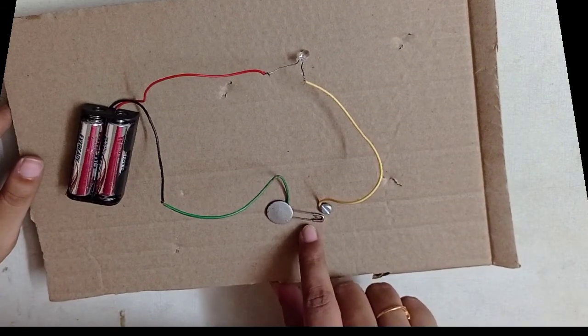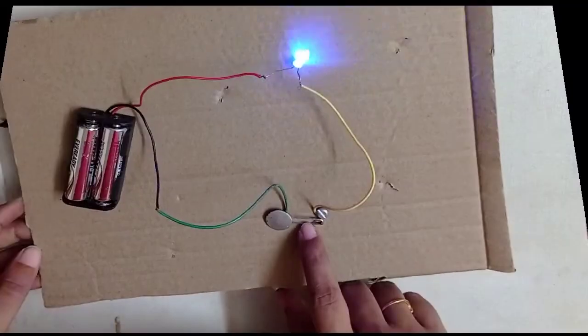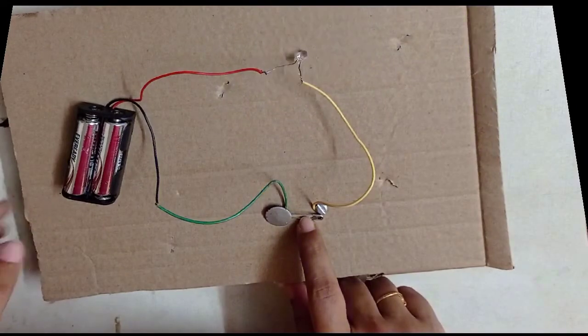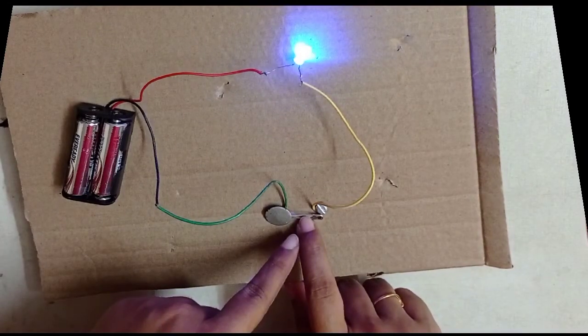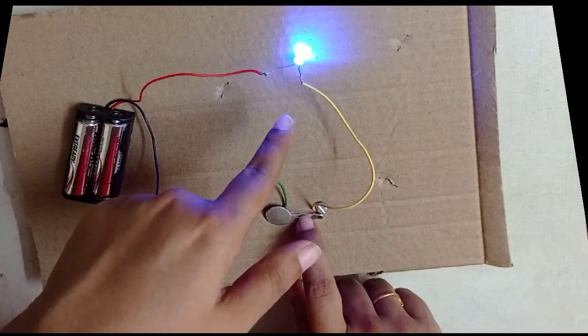The safety pin is acting like a switch. When we close the circuit with the help of the safety pin, the bulb starts glowing.